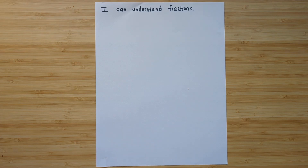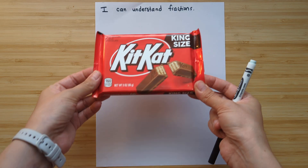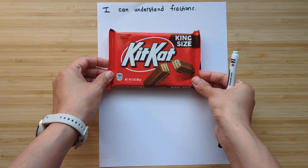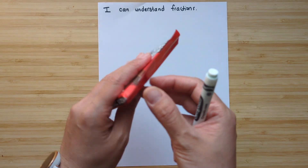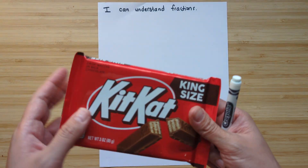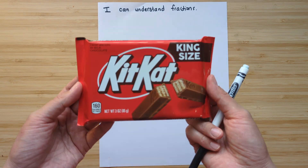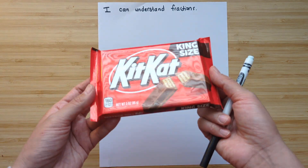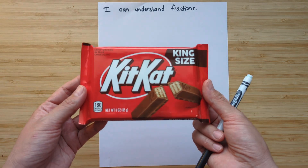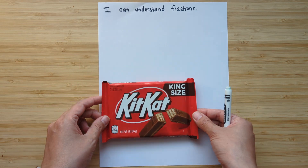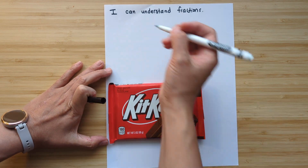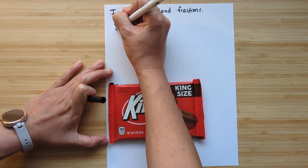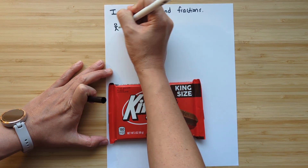The 'I can' for today is: I can understand fractions. Let's say you want to share this KitKat bar, and you want to share it amongst seven friends — so including yourself, everyone's going to have an equal piece. So let's quickly draw out eight people.